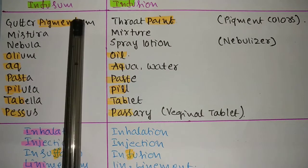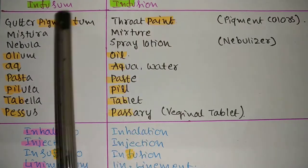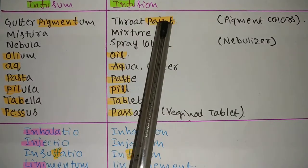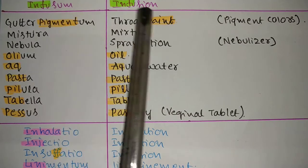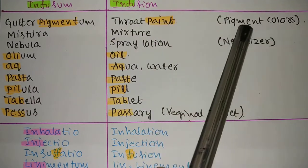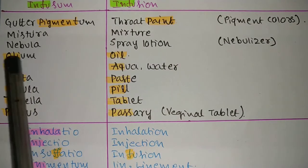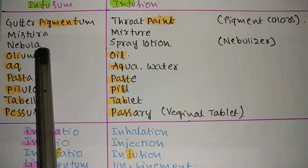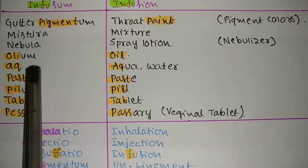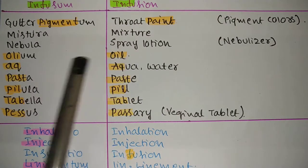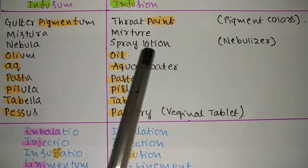'Guttur Pigmentum' is a throat paint. It seems completely different from throat, but link 'pigment' to 'paint' — color pigments and color paint. Like that you can connect the two words. 'Mistura' means a mixture. 'Nebula' — you know it from nebulizer — means a spray lotion, generally used for asthma patients. 'Oleum' means oil; see the three letters O-L-I in oleum and O-I-L in oil.